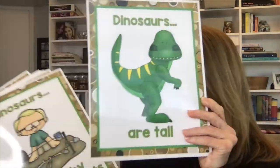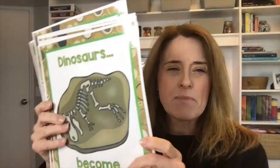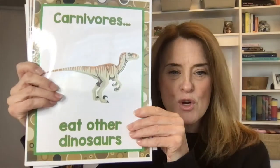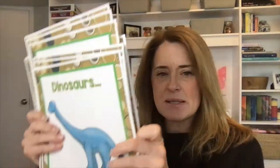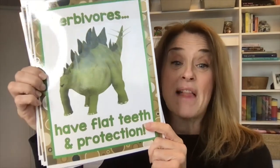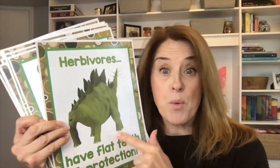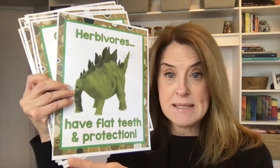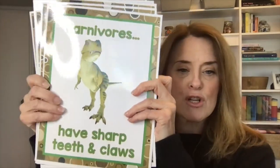My posters use a lot of the same images but with different text. For example: dinosaurs are tall, dinosaurs are studied by paleontologists, dinosaurs become fossils, carnivores eat other dinosaurs, herbivores eat plants, dinosaurs are big, dinosaurs have spikes, dinosaurs have horns. These are informative little posters — herbivores have flat teeth and protection like spikes. I use them not just as classroom decoration but as part of my class discussion about what herbivores and carnivores are. The kids like the pictures and they're really useful.